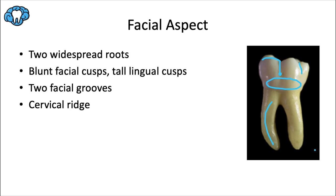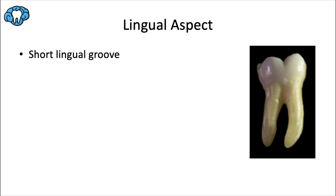Some dentists will call the facial height of contour a cervical ridge because it's fairly long, but it's not quite as pronounced as it is in the mandibular second molar. The lingual groove is very small and almost never fissured, so you're not going to see a lingual pit on these teeth. It's also right in line with the bifurcation. The lingual height of contour is a bit higher than on the facial surface and is very prominent, to hold the tongue back away from the teeth.